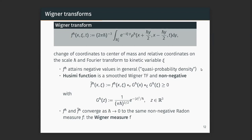The Wigner transform was defined to be a quantum analog of a phase-space density, but it cannot really be a phase-space density because it has negative values in general. You can remedy this by smoothing it — convolving with Gaussians in both variables — to obtain the Husimi function, which is non-negative but doesn't have the right moments. However, both the Wigner transform and the Husimi function converge to the same object in the semi-classical limit: a non-negative measure called the Wigner measure.